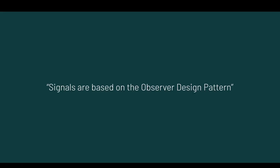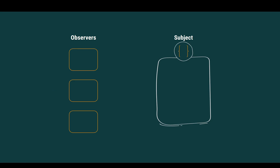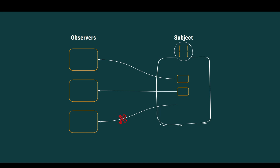The signals are based on the observer design pattern, where we have two actors: the observers and the subject. The subject maintains a list of observers, and an observer becomes one when it has been subscribed to that particular subject. When the subject has something new — a value — then this value is emitted to the subscribed observers. And if one of those observers doesn't want to receive any update, it just has to unsubscribe.